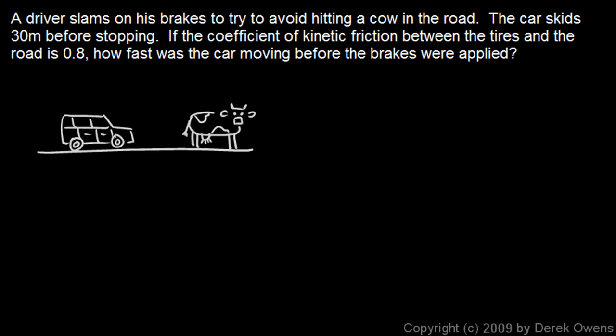This is a good example of a physics problem. We know that rubber tires on dry pavement has a coefficient of friction of about 0.8. So if you know the stopping distance, and you can often get that from the skid marks on the road, then you can figure out how fast the car was going.